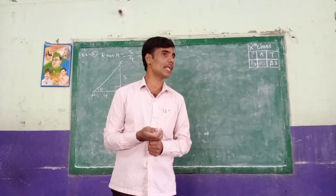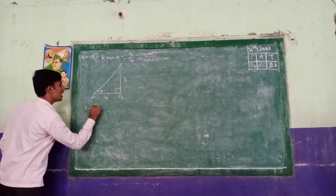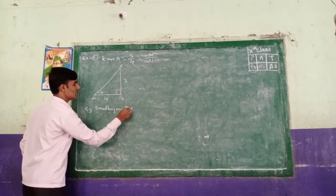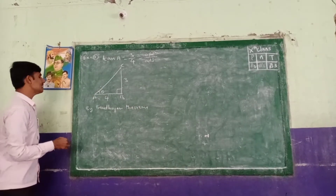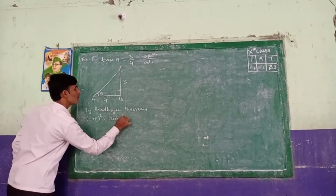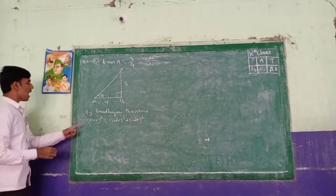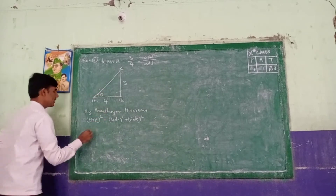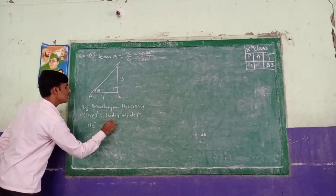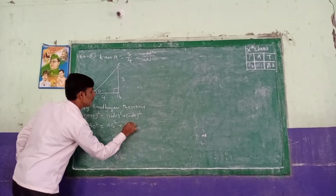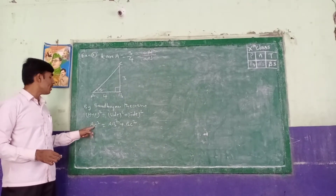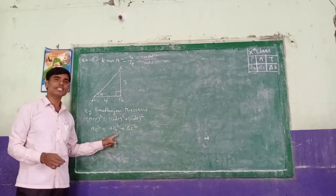By the Bodhyayana theorem — also known as the Pythagorean theorem — in a right angle triangle, the square of the hypotenuse is equal to the sum of the squares of the other two sides. So AC square equals AB square plus BC square.